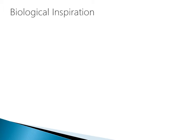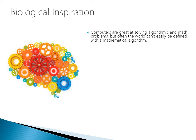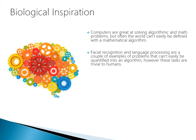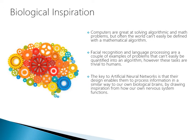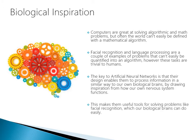Neural networks take their inspiration from biological processes. Computers are great at solving algorithmic and math problems, but often the real world can't easily be defined with a mathematical algorithm. For example, facial recognition and language processing are problems that can't easily be quantified into an algorithm. However, these tasks are trivial to humans. The key to artificial neural networks is that their design enables them to process information in a similar way to our own biological brains, by drawing inspiration from how our nervous system functions, making them useful tools for solving problems like facial recognition.